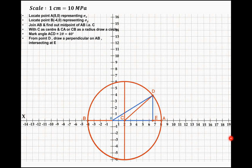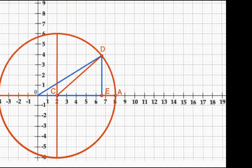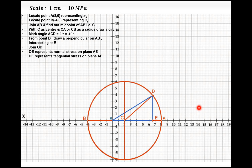From point D we draw a perpendicular on AB so that it intersects at point E, and then we join O with D. OE will represent the normal stress on plane AE. Similarly, DE will represent the tangential stress on plane AE, and OD will represent the resultant stress on plane AE.